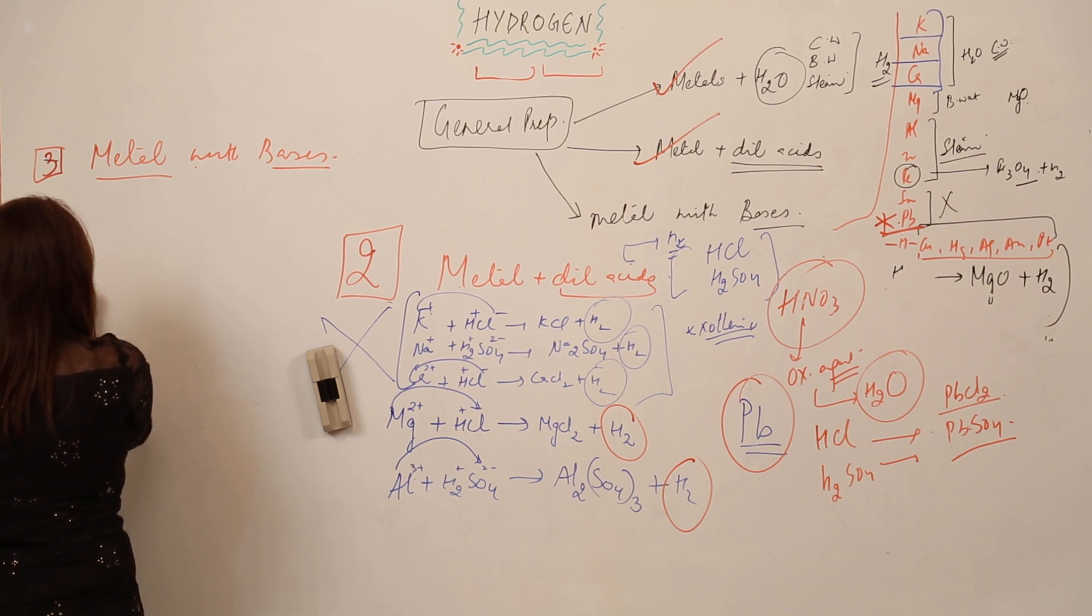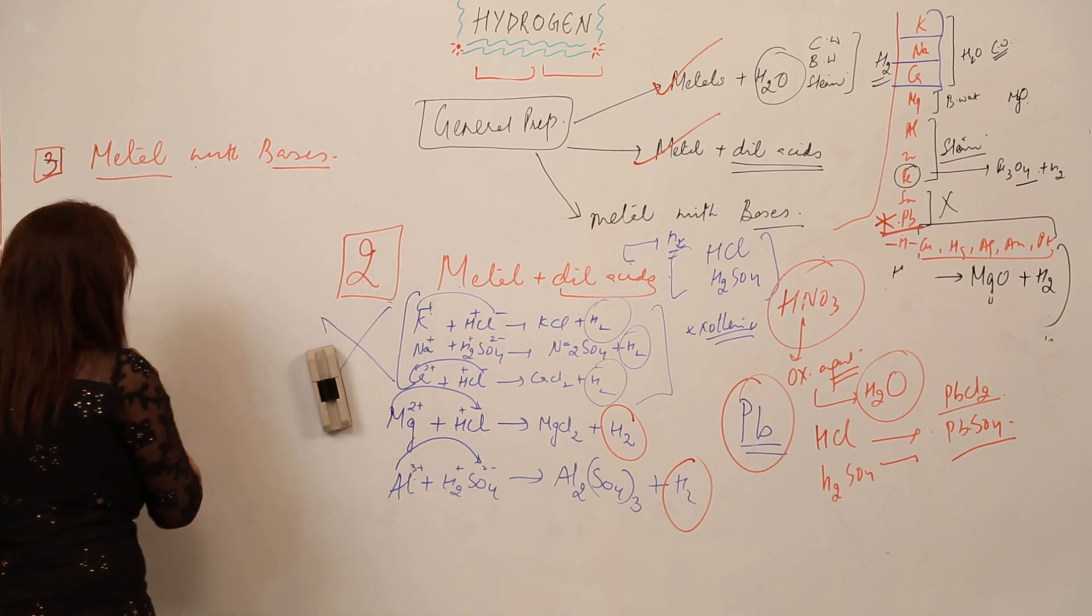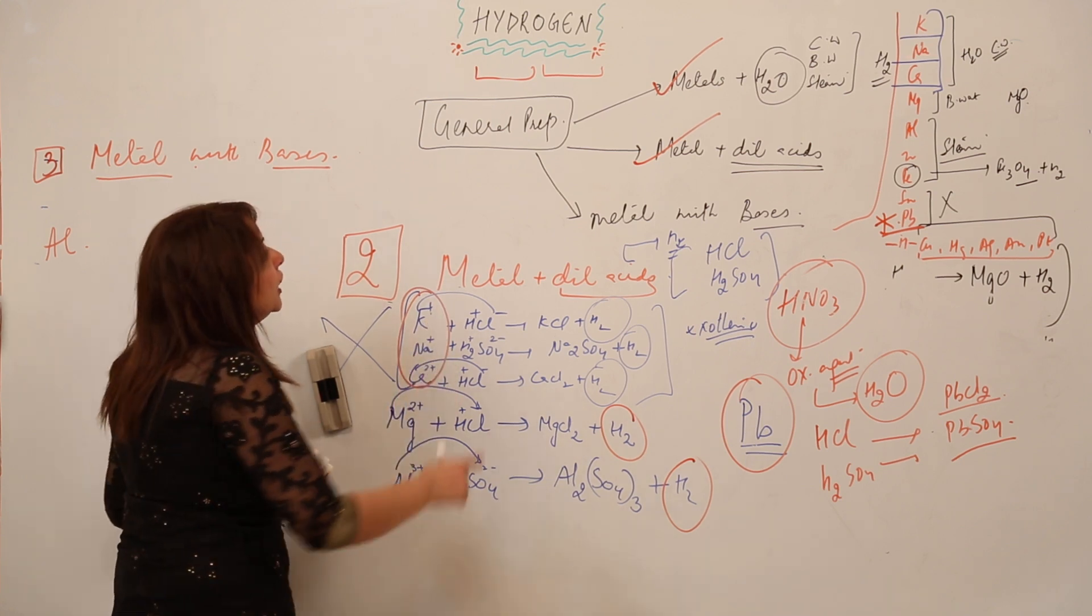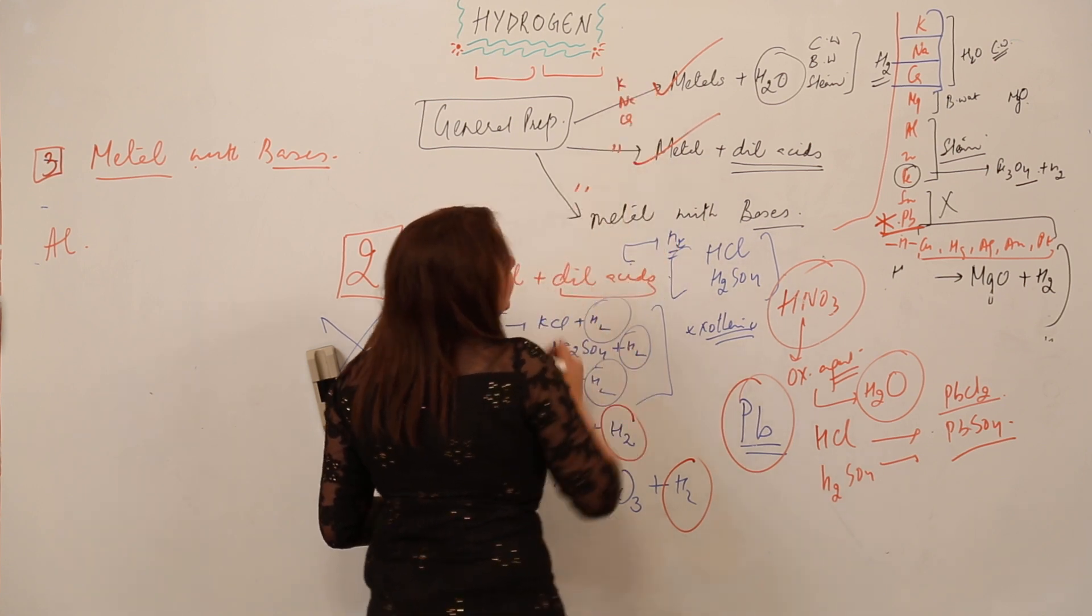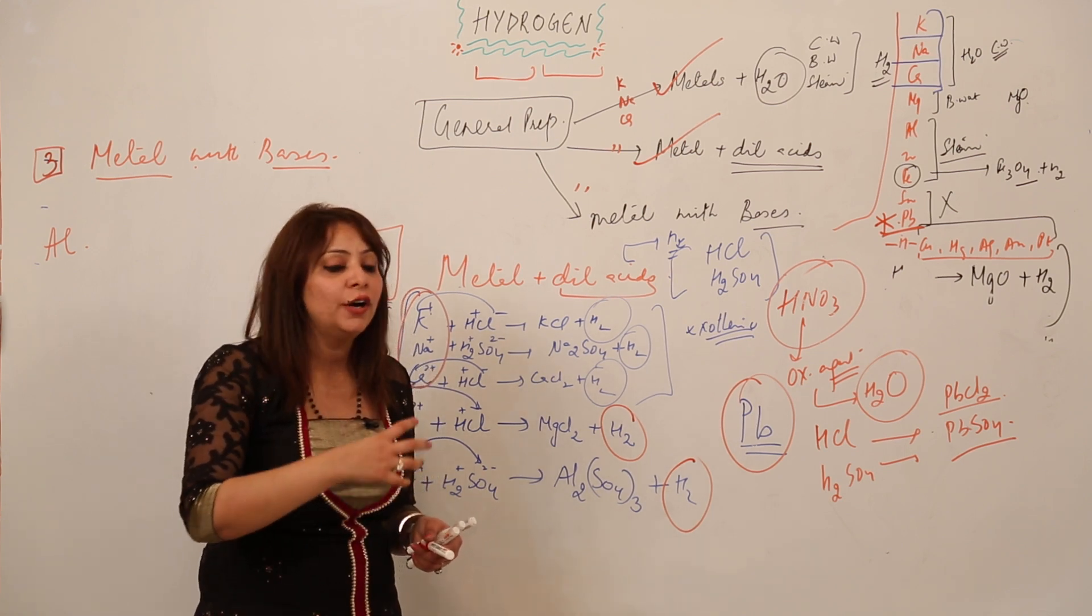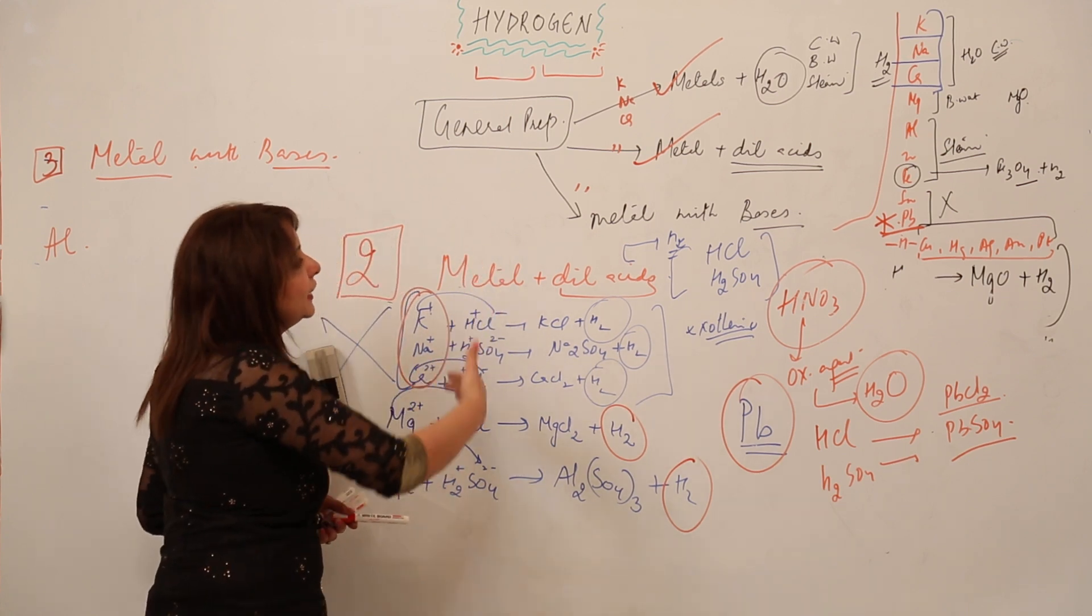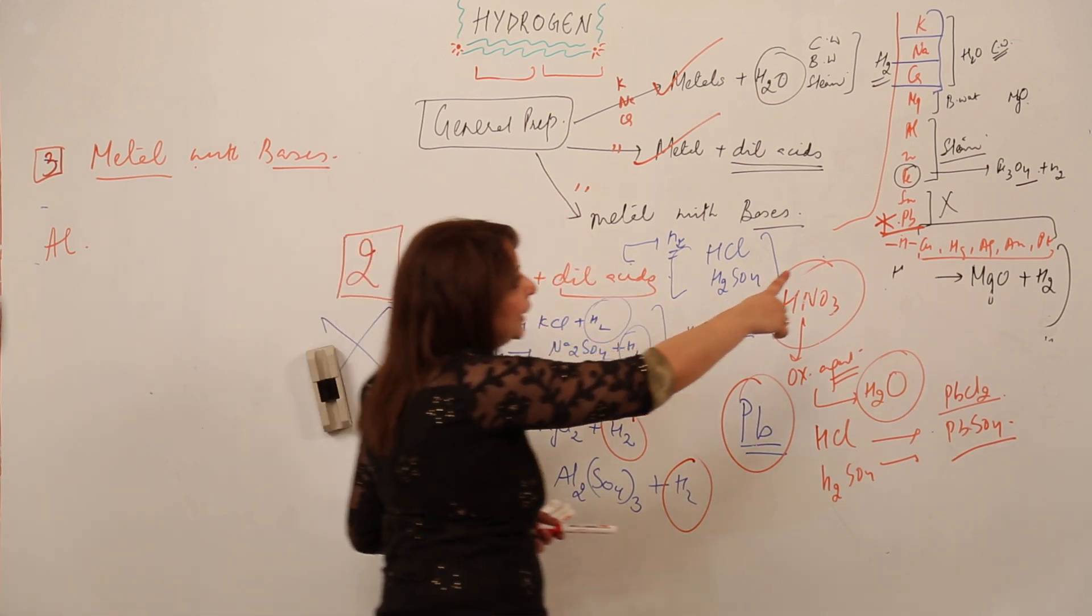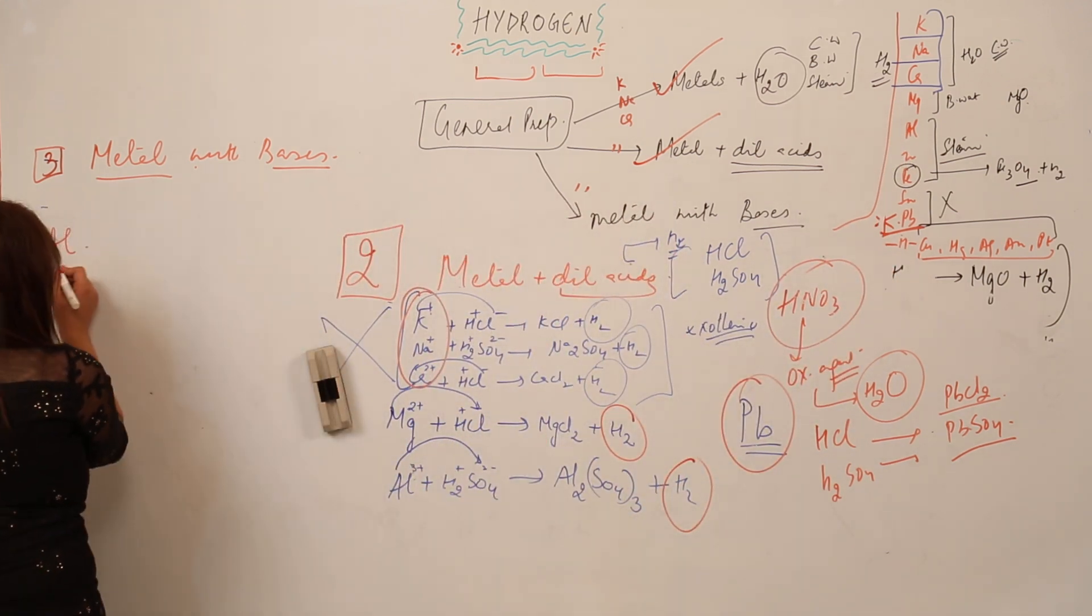I'm taking an example of aluminum. In the same way, when we are reacting with them we are not using these elements. The same reason being the reaction is exothermic. In all three of the preparations we are not using potassium, sodium, and calcium because it is an exothermic reaction and the H2 which gets liberated just catches fire, which leads to an explosion. So we can take the metals which occur below in the reactivity series, like starting from magnesium. The third metal I am taking as an example is aluminum.